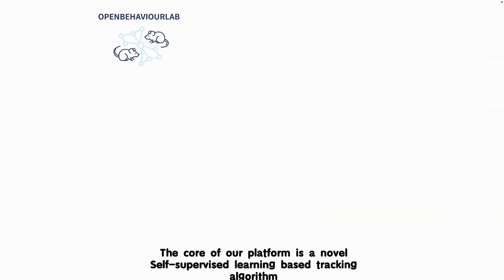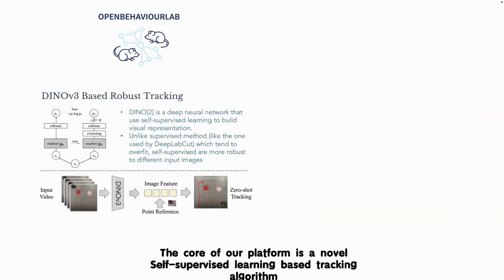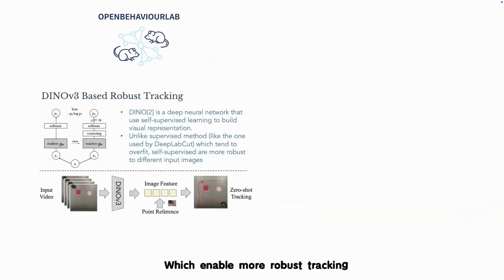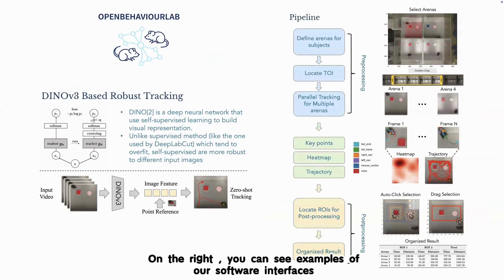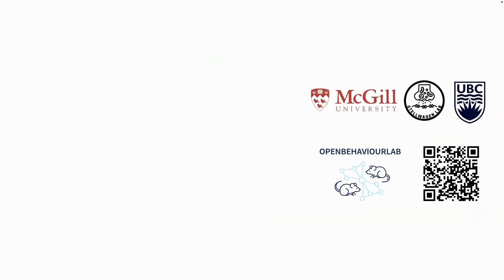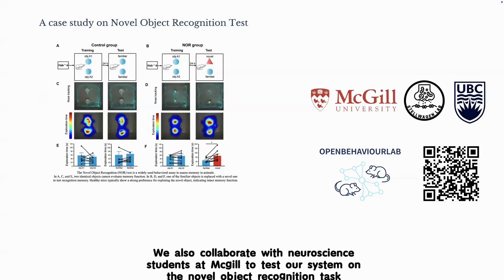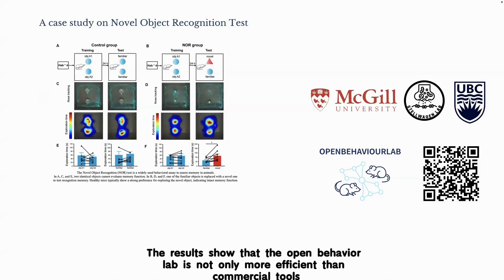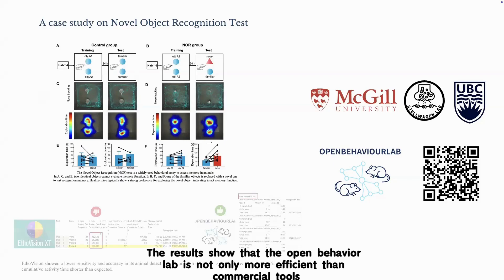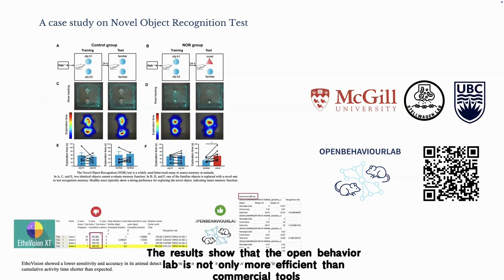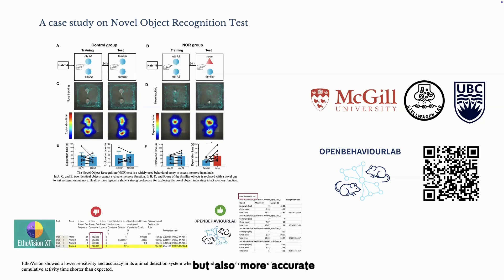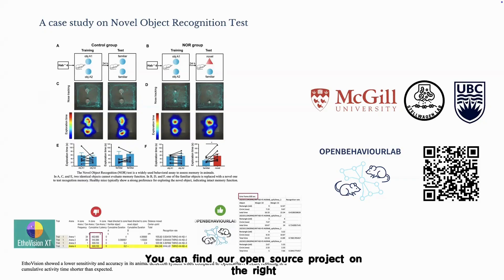The core of our platform is a novel self-supervised learning-based tracking algorithm, which enables more robust tracking without requiring manual annotation of data. We also collaborated with neuroscience students at McGill to test our system on the novel object recognition task. The results show that OpenBehaviourLab is not only more efficient than commercial tools like IsolVision, but also more accurate.